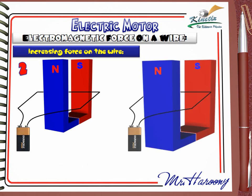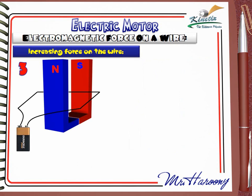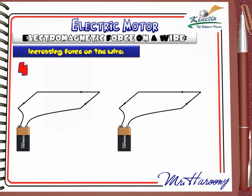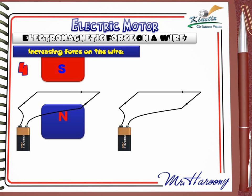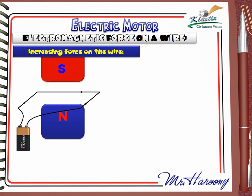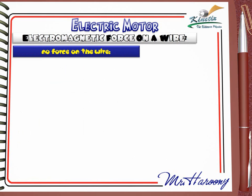Change 2: Replace the magnet with a stronger one, increasing the magnetic field strength and hence the force — use a stronger magnet. Change 3: Replace the battery with a stronger one to produce a larger current — increase the current intensity. Change 4: Bring the poles of the magnet closer together, which strengthens the magnetic field. In summary, to increase the force: (1) increase number of turns, (2) use a stronger magnet, (3) increase current intensity, (4) bring the poles closer.